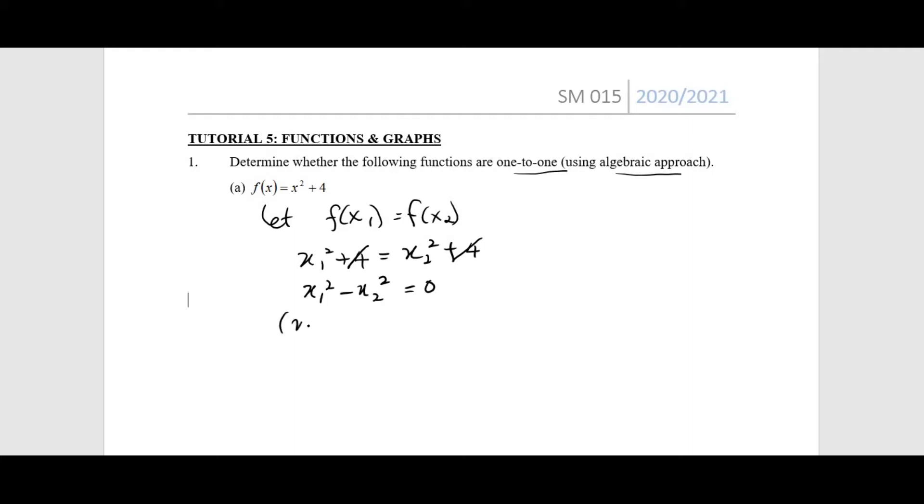Now you can factorize this, then you'll get (x1 - x2)(x1 + x2) = 0. So from here, when x1 - x2 = 0, then you'll get x1 = x2.